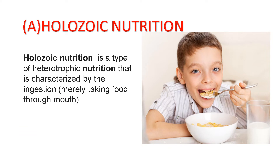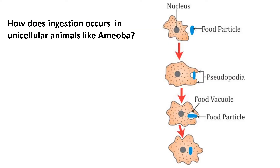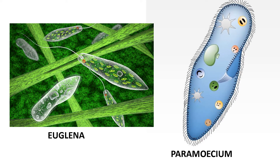Holozoic nutrition is a type of heterotrophic nutrition in animals that is characterized by ingestion, which means taking food through the mouth. Now let's understand how ingestion occurs in unicellular animals like amoeba. Amoeba do not have a specific ingestion organ like a mouth. So whenever there is a food particle near it, it tries to surround it with the help of its false feet called pseudopodia. As it surrounds, the food particle gets inside, and this process is called ingestion. Thus, amoeba ingests the food particle with the help of pseudopodia, and after ingestion it is preceded by digestion and so on. In unicellular organisms like amoeba, euglena, and paramecium, all steps of nutrition occur in a single cell.